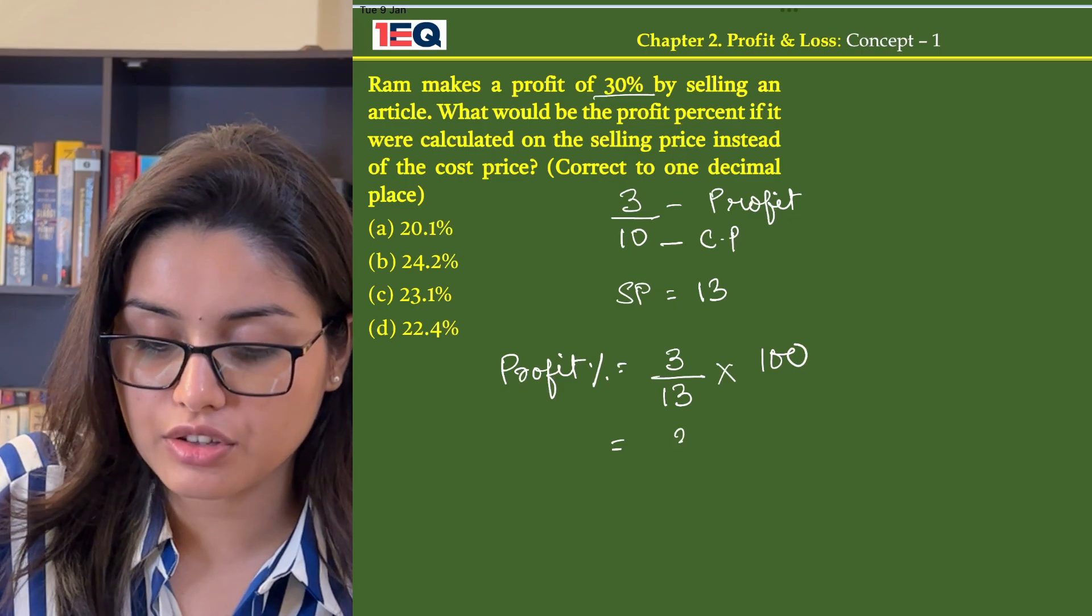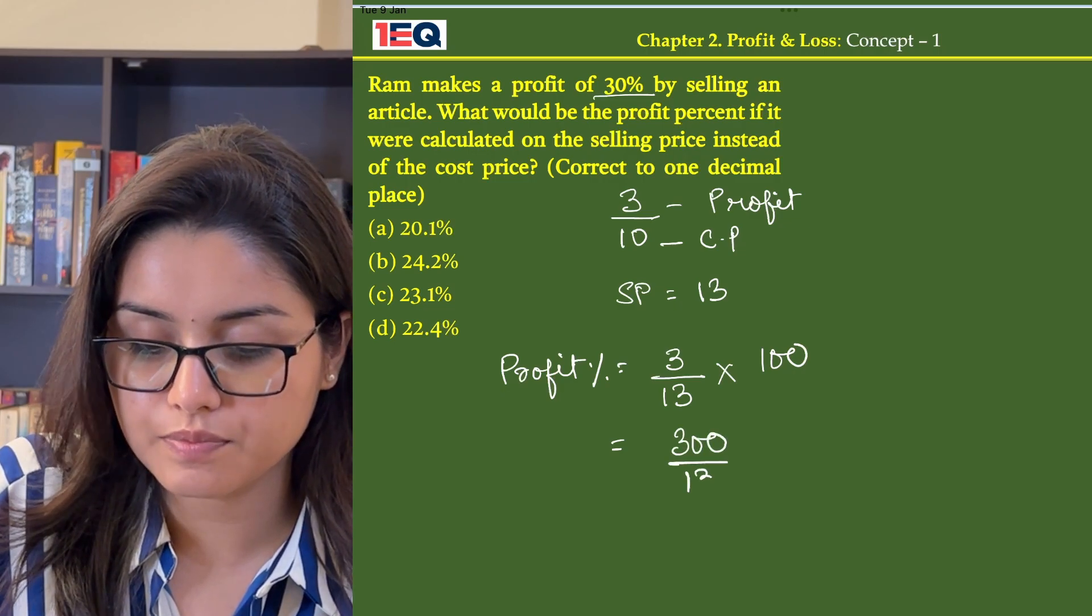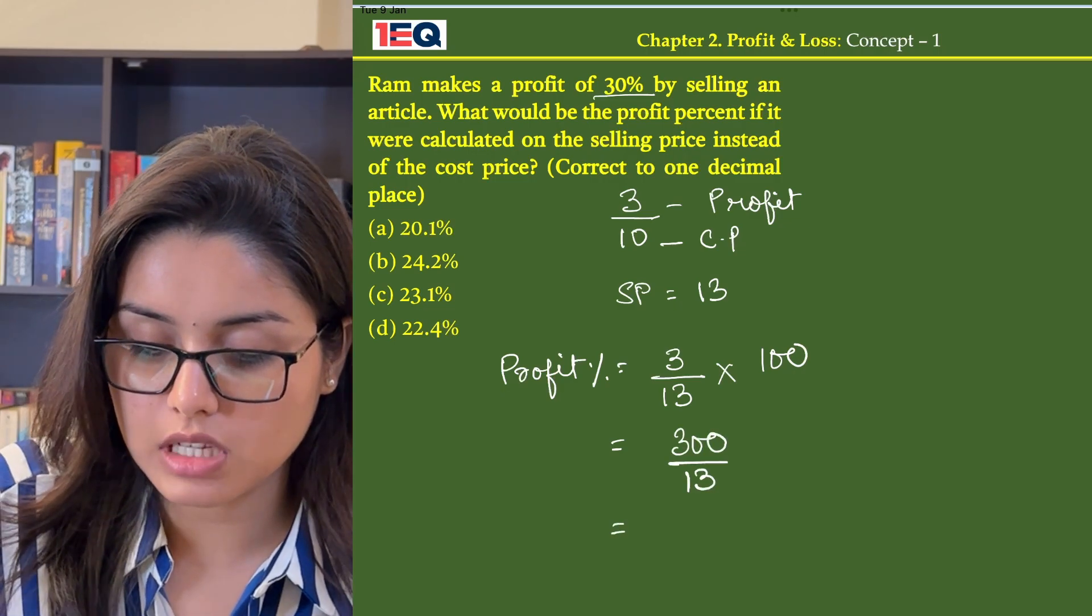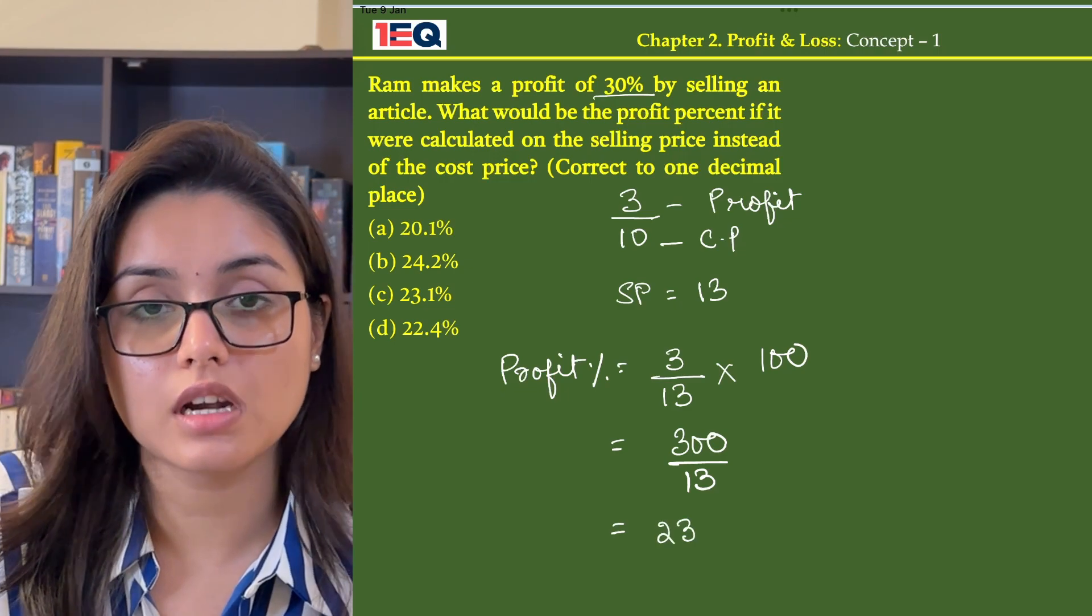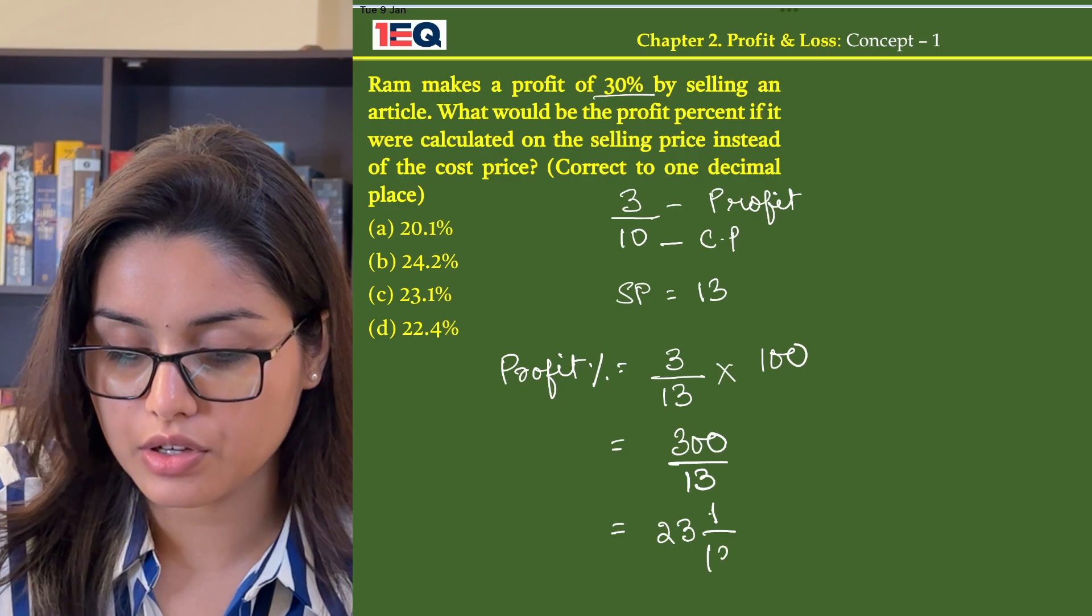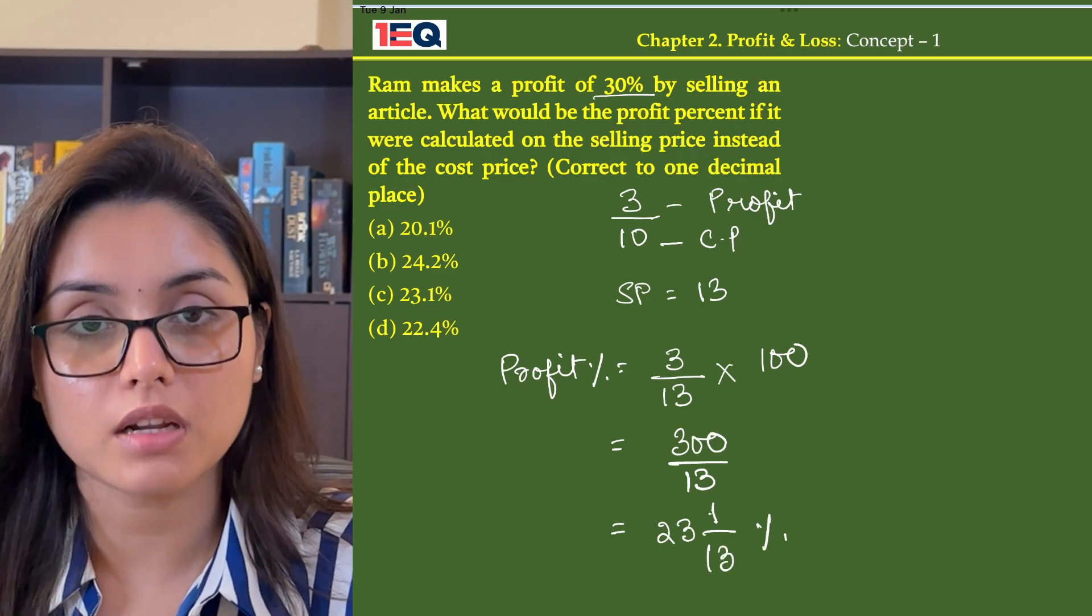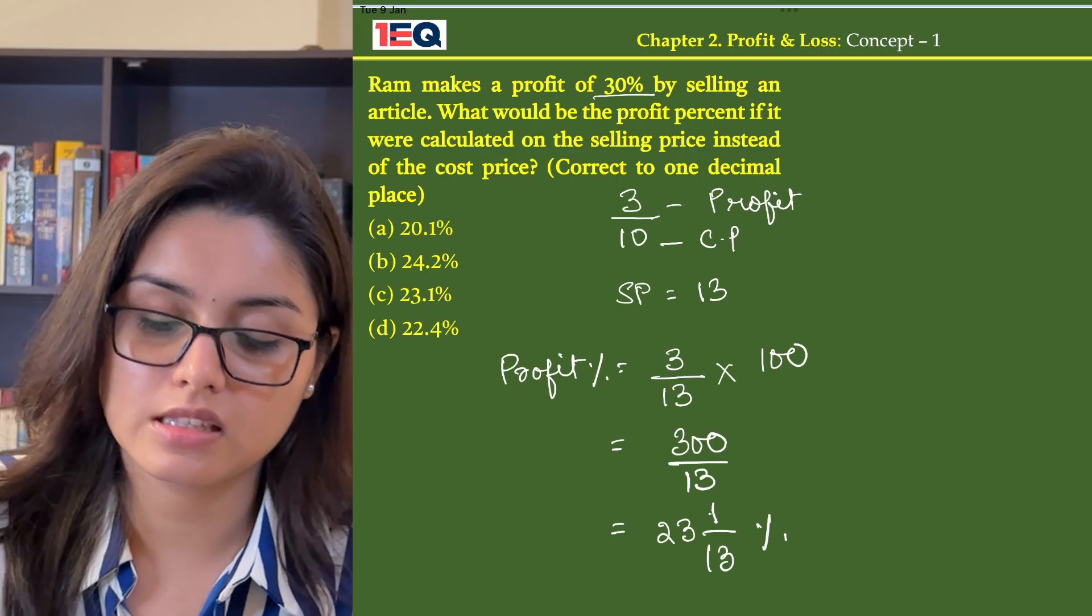On calculating we find 300 by 13. On dividing we will get 2s are 26, 3s are 39. We are left with 1 by 13 percent, which is 23.1 percent. So our answer is C.